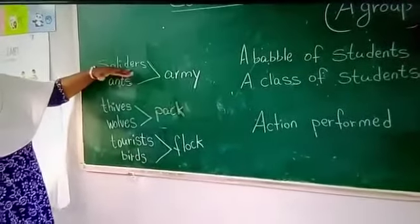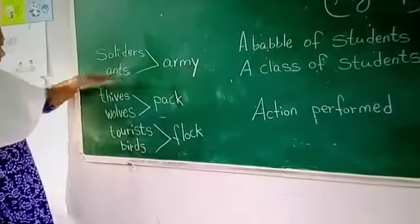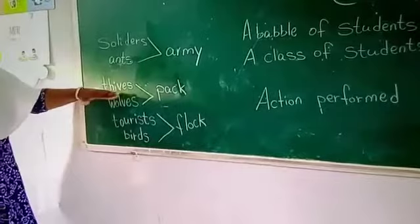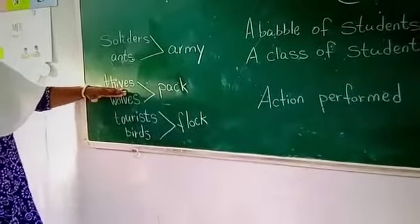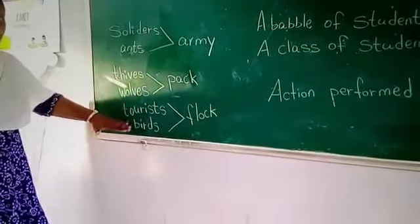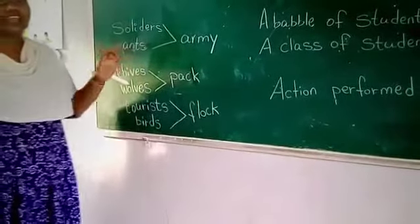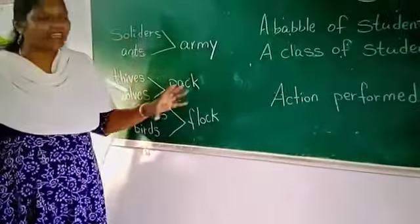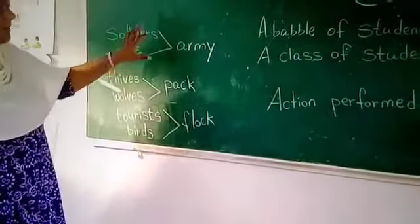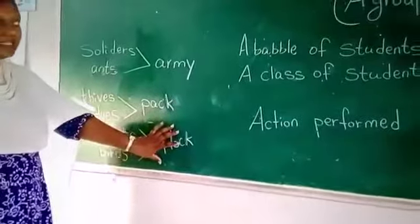Soldiers walk and ants walk in a proper manner. These all have the same characteristics. So we have given names: army, hat, slope. Right.